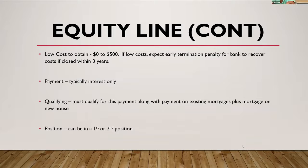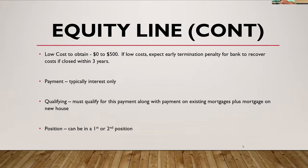With an equity line, the cost to obtain it is low. Some banks will charge something up front, some banks won't. Most equity lines come with a three-year early termination penalty — call it a prepayment penalty — and it's really for them to recover their costs, because they'll do an appraisal, a title search, processing, and underwriting. Sometimes they may not charge the customer a penny up front, but if that person pays the equity line off in two to three months, they need to recoup those costs.